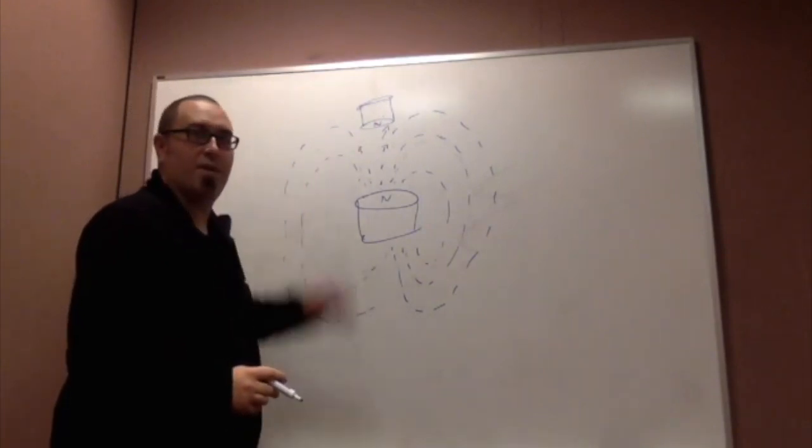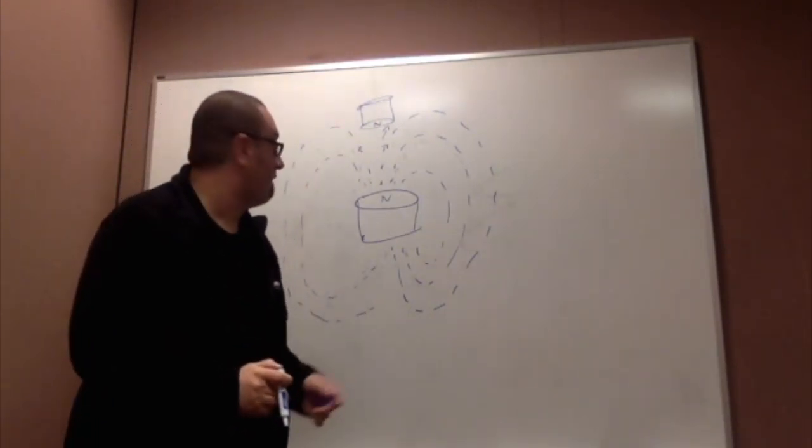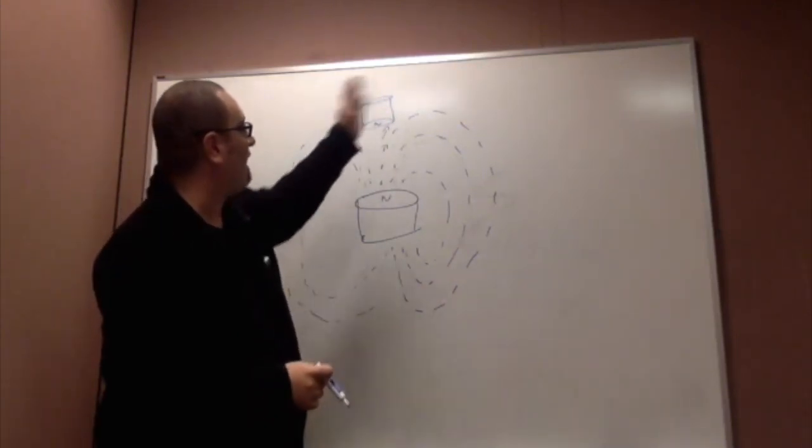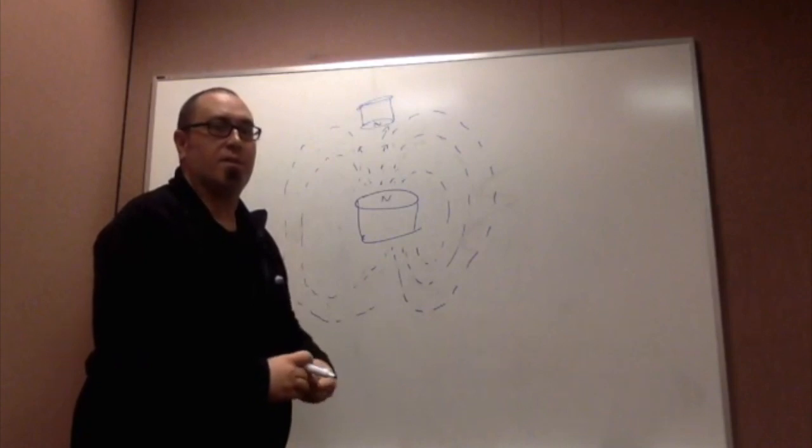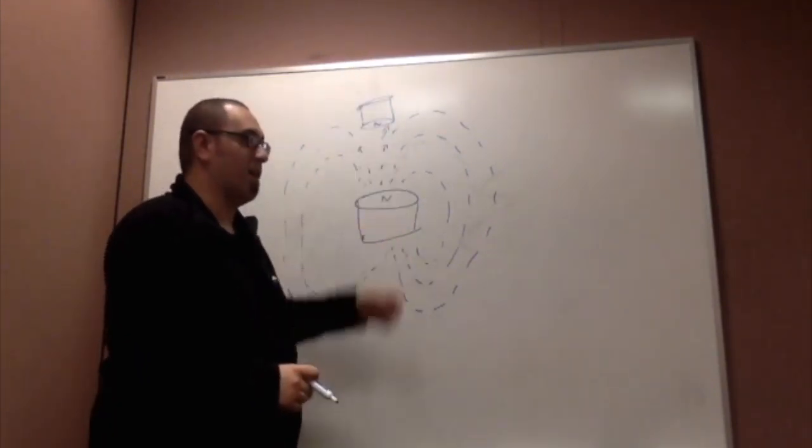Well, the problem is that there's this theorem called Earnshaw's theorem that says the magnet's not going to want to stay in place. It's going to want to topple over one way or the other. Ultimately, it's going to want to flip over so that its south face is facing here and get sucked down.